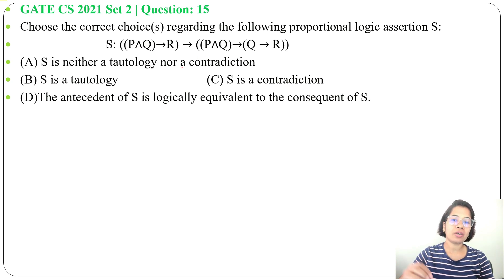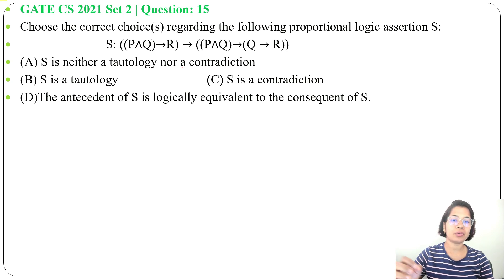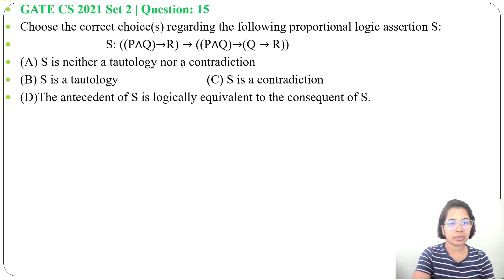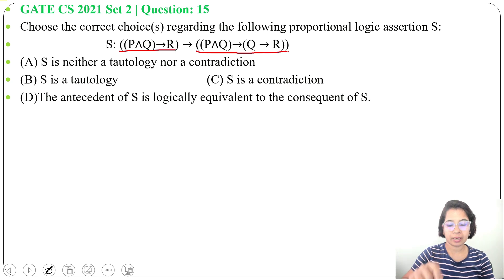Tautology means all truth values are true; contradiction means all truth values are false. In option D, it asks whether the antecedent of S is logically equivalent to the consequent of S. The antecedent is P∧Q→R and the consequent is P∧Q→(Q→R).